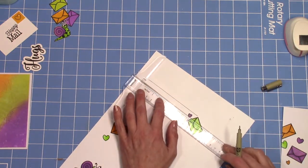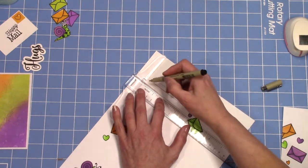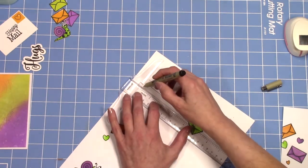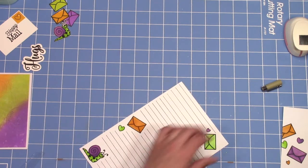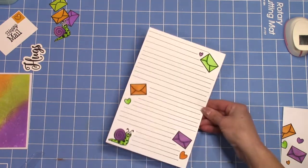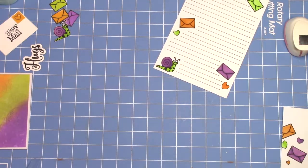Once everything is colored in, I'm going to draw some lines here on my stationery just so that I have a place to write. You totally don't have to do this, I just think it looks cute. I'm just using a black micron pen to draw my lines and a straight ruler or a T ruler.